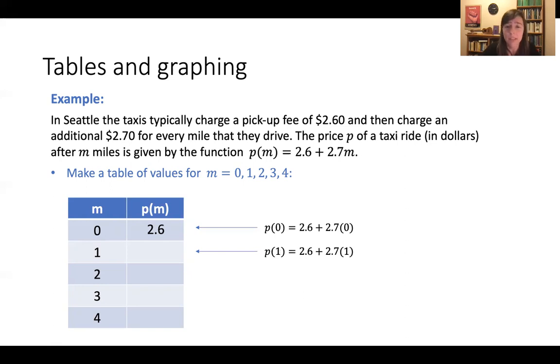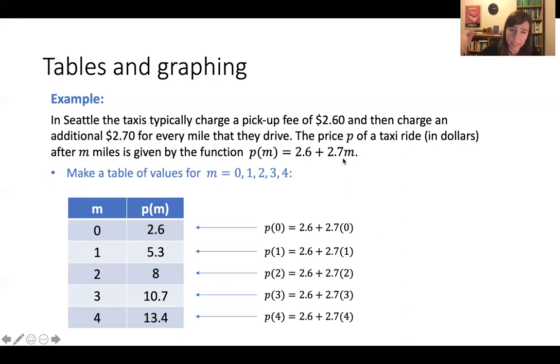P of 1, we already calculated that. That was 5.3. And here in this row, p of 2, you plug in 2 for miles and you get 8. We have 3, you get 10.7. And p of 4, you get 13.4. Okay, so if you have an equation, you can make a table of values by plugging in a bunch of inputs and then organizing your data in that table.